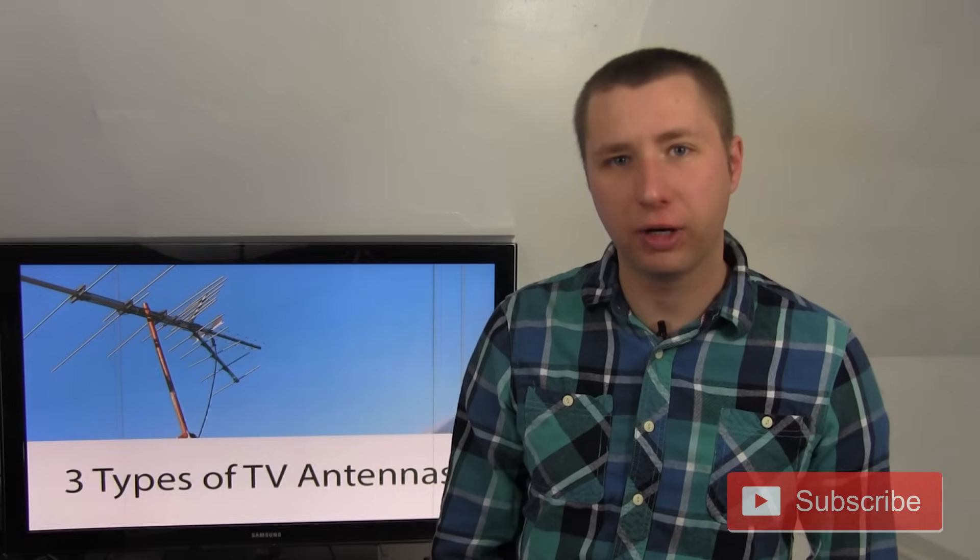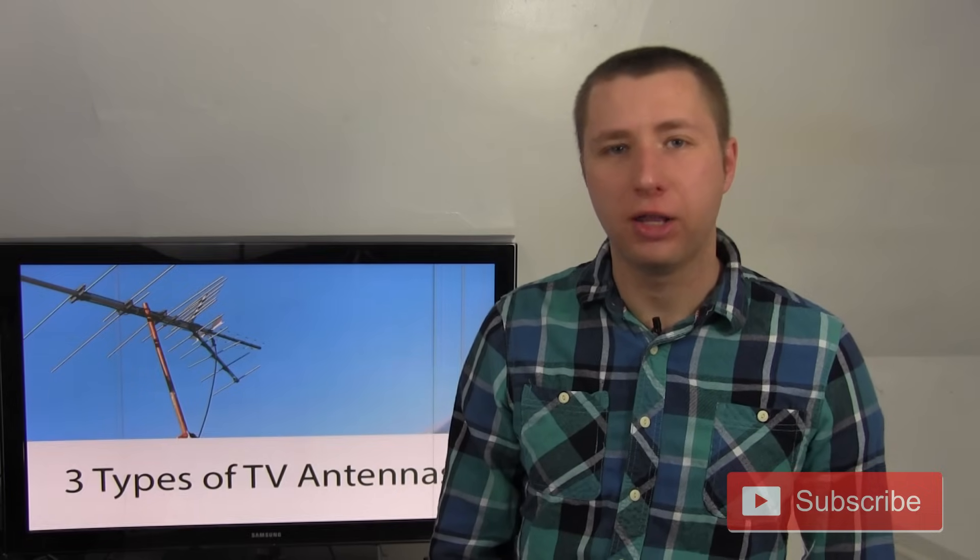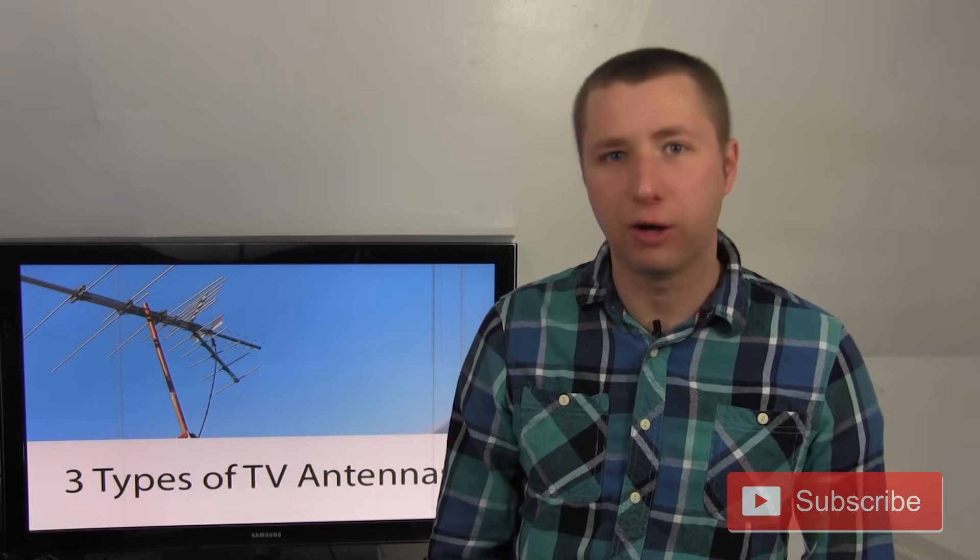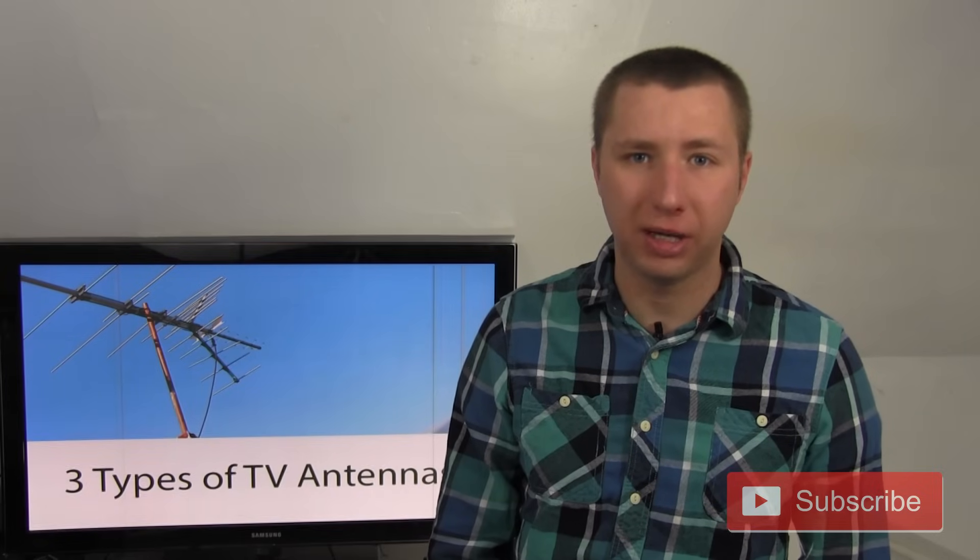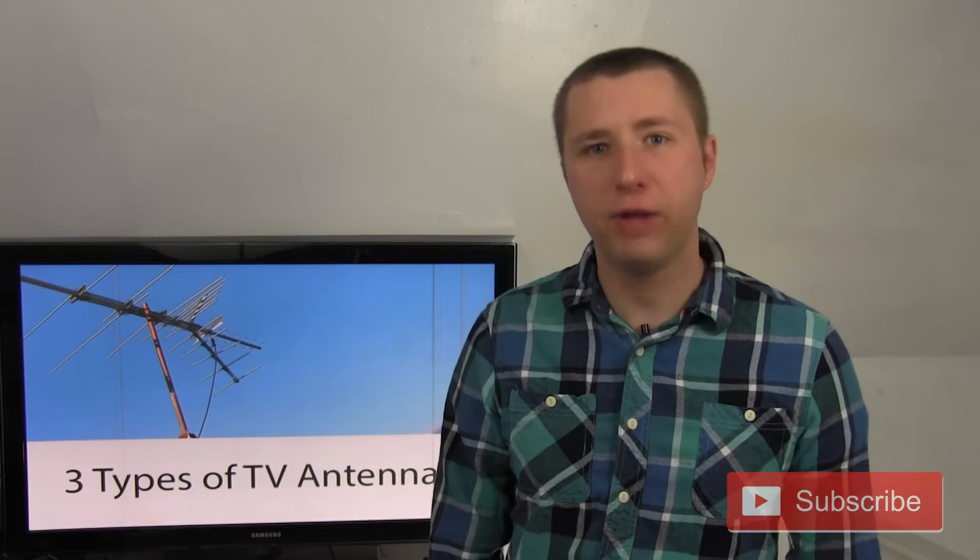Ultimately, there are three different kinds of television antennas. There are VHF low antennas designed to pick up channels two through six. There are VHF high antennas designed to pick up channels seven through 13, and UHF antennas are designed to pick up channels 14 and above.